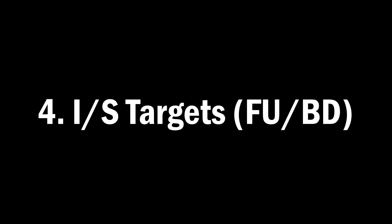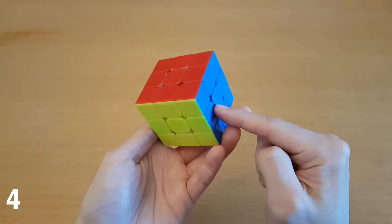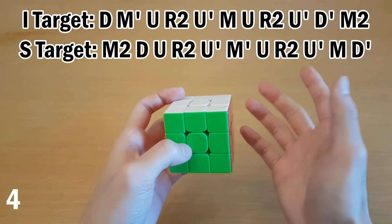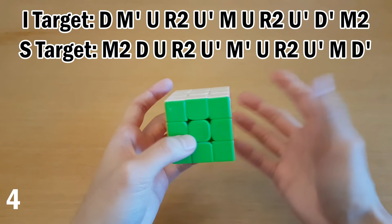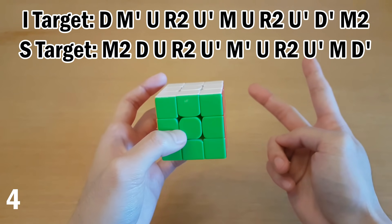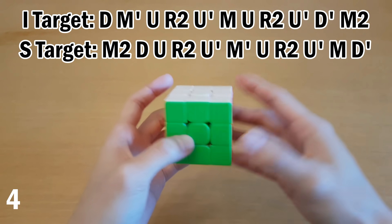Number four, I and S targets. For I and S, how they work is there are just these algorithms, and if you get them first in a letter pair, you do the algorithm. But if it comes second in the letter pair, you do the algorithm for the other target.